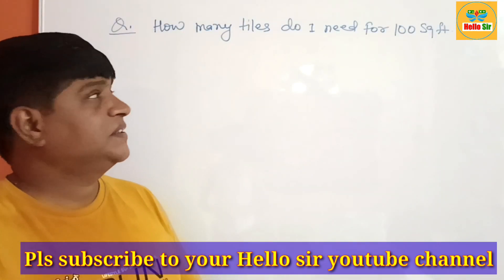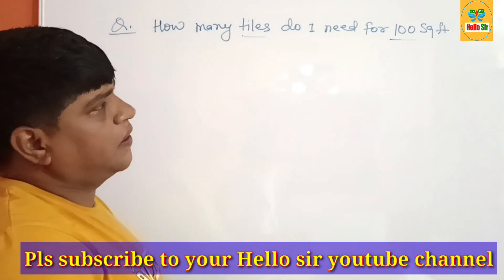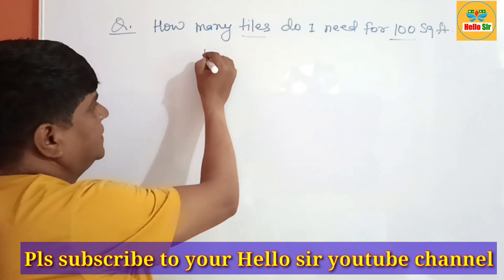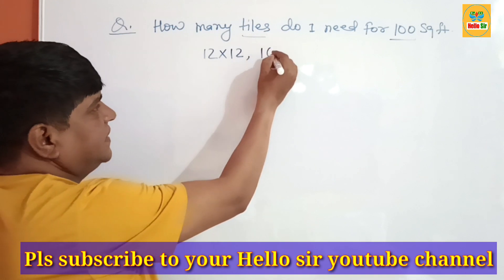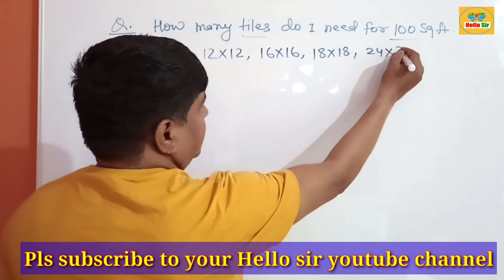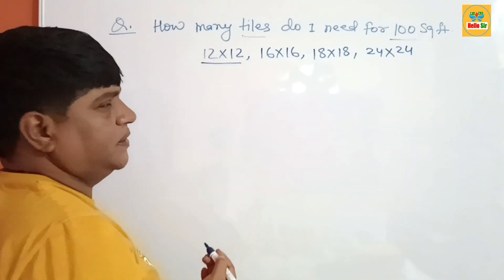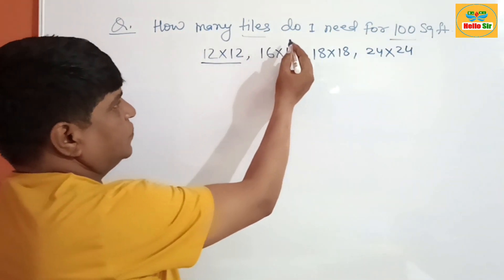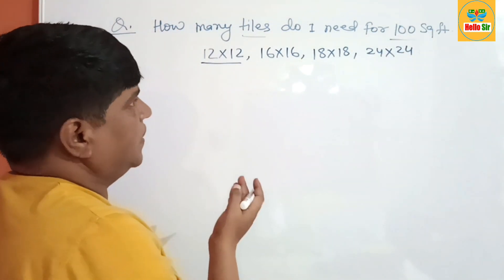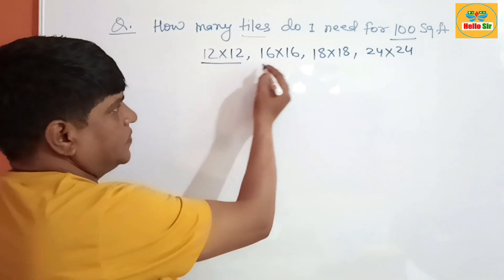Hi guys, today there is a question: how many tiles do I need for a 100 square foot area of your walls or floor? You have seen there are various sizes of tiles such as 12×12 inches, 16×16 inches, 18×18 inches, and 24×24 inches. In this calculation, you will find how we calculate the required number of tiles for your floor and walls area. There are four types of tiles given here.